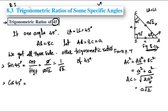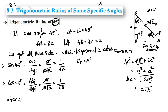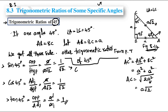For cos 45°, adjacent divided by hypotenuse is a over a√2, so 1/√2. For tan 45°, opposite over adjacent equals a divided by a, so the 'a' cancels and tan 45° equals 1.